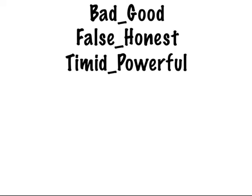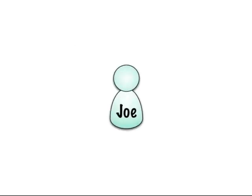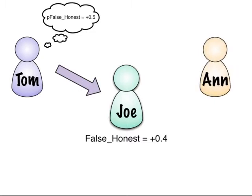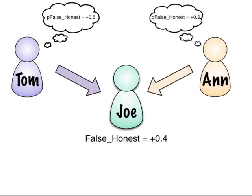These three traits define a character's personality. We extend these traits by asking a simple question: how do other people perceive the values of a character's personality traits? For example, suppose Joe has a False Honest value of plus 0.4 — he's a pretty honest guy. But Tom doesn't know the actual value; he has only his own experience to guide him, which never shows the entire picture. So Tom's perceived value of Joe's False Honest will not be the same as the actual value. Similarly, Anne has her own perceived value based on her own experiences with Joe. We call these perceived values the P values.